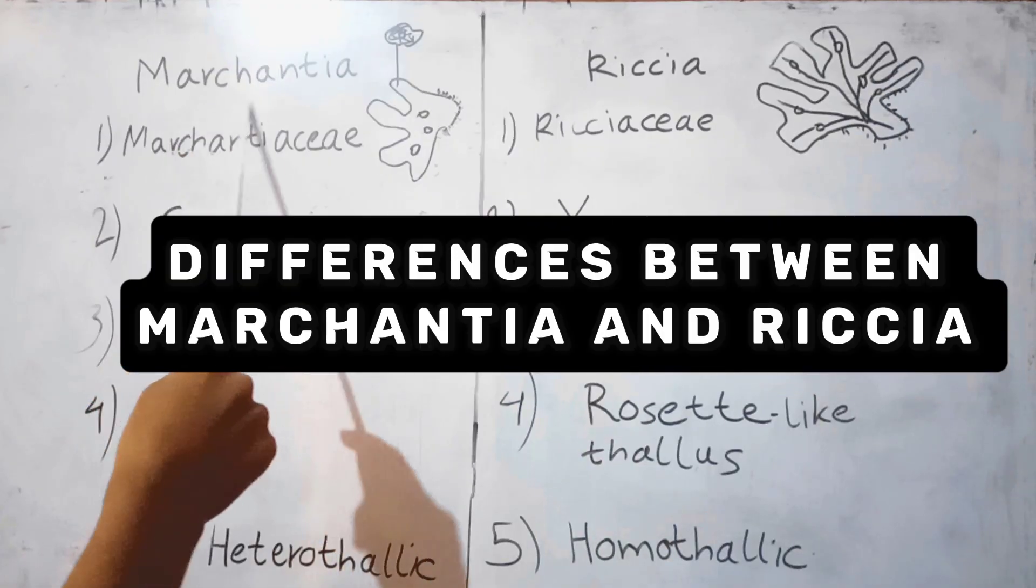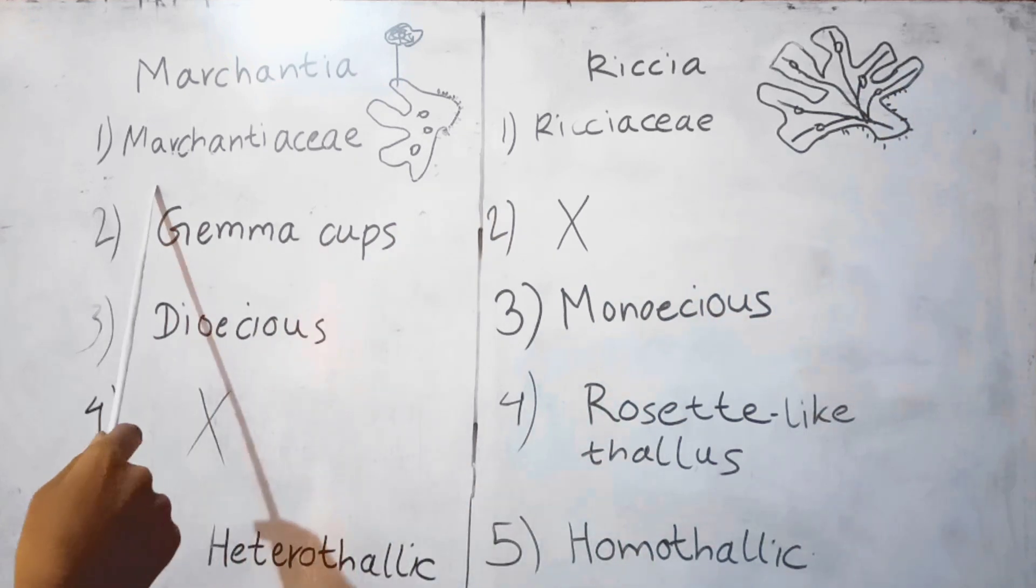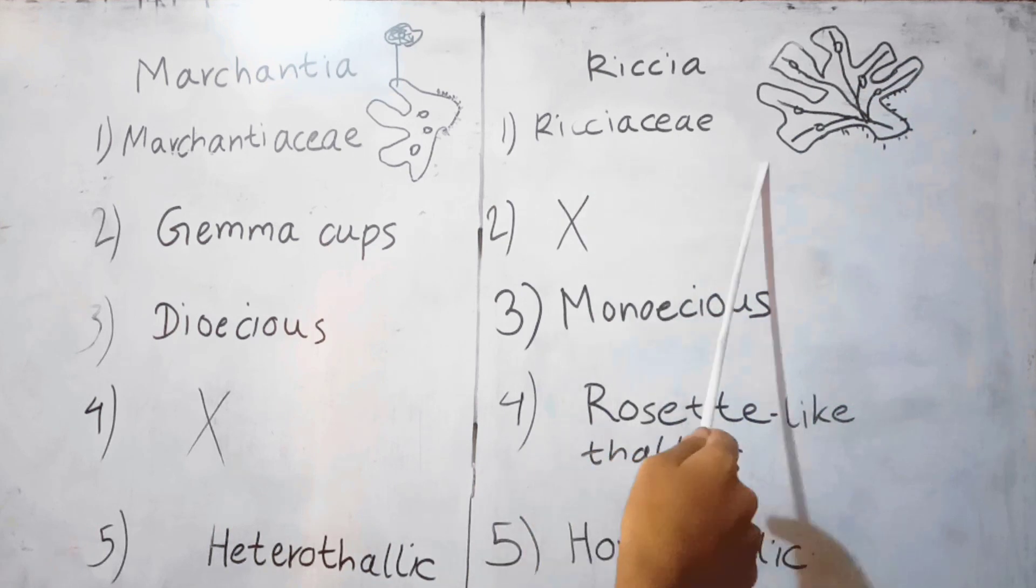Today we are going to talk about the major differences between Marchantia and Riccia. Marchantia belongs to the genus Marchantiaceae. Riccia belongs to the genus Ricciaceae.